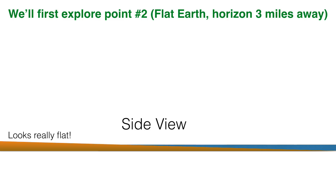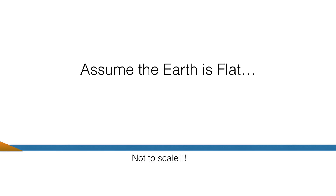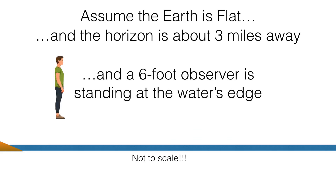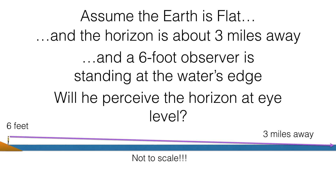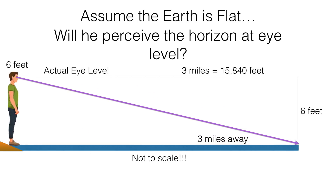We're going to start with a flat Earth believer who sees the horizon three miles away. The Earth is flat, the horizon is three miles away, and we've got a six-foot observer standing at the water's edge. We want to figure out his perception of the horizon. So let's make a triangle. This triangle looks ridiculous because it is three miles long and six feet tall - definitely not to scale, but that will help us draw the angles.